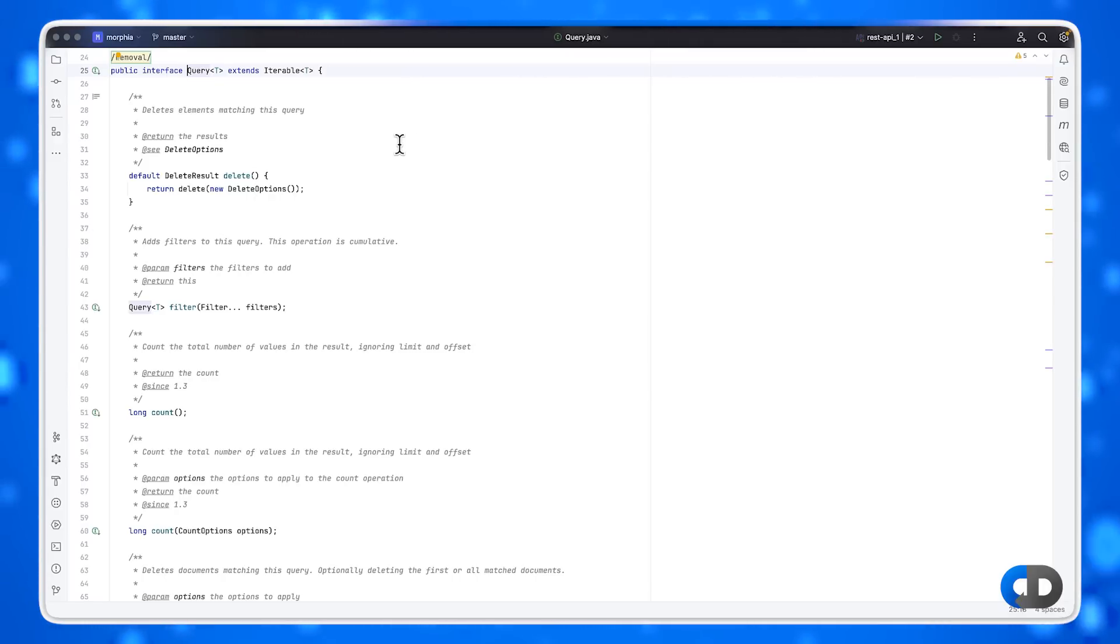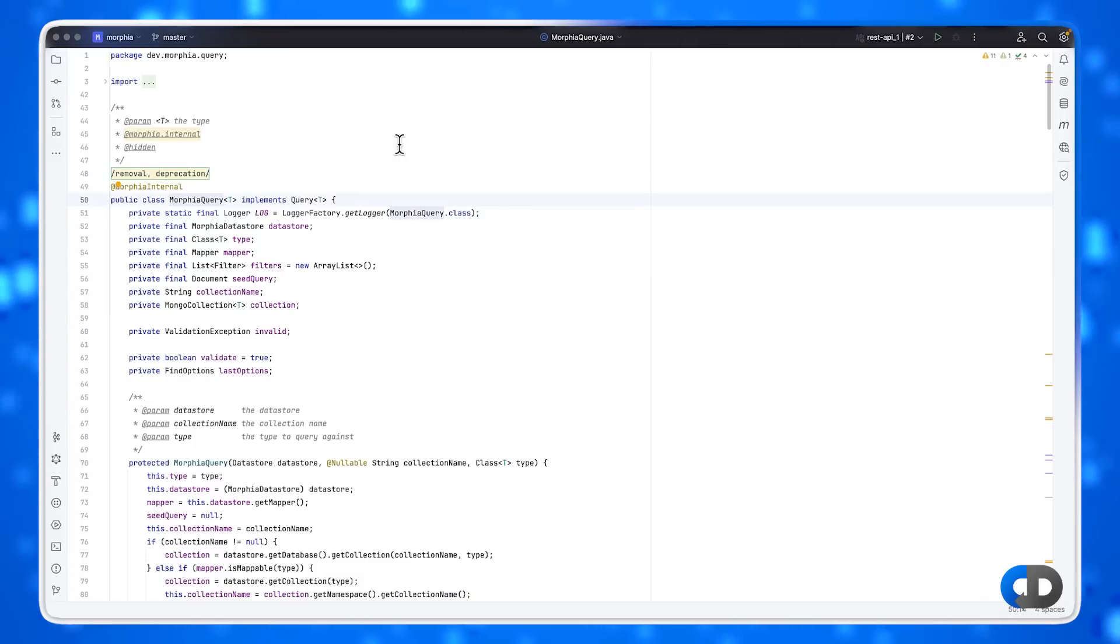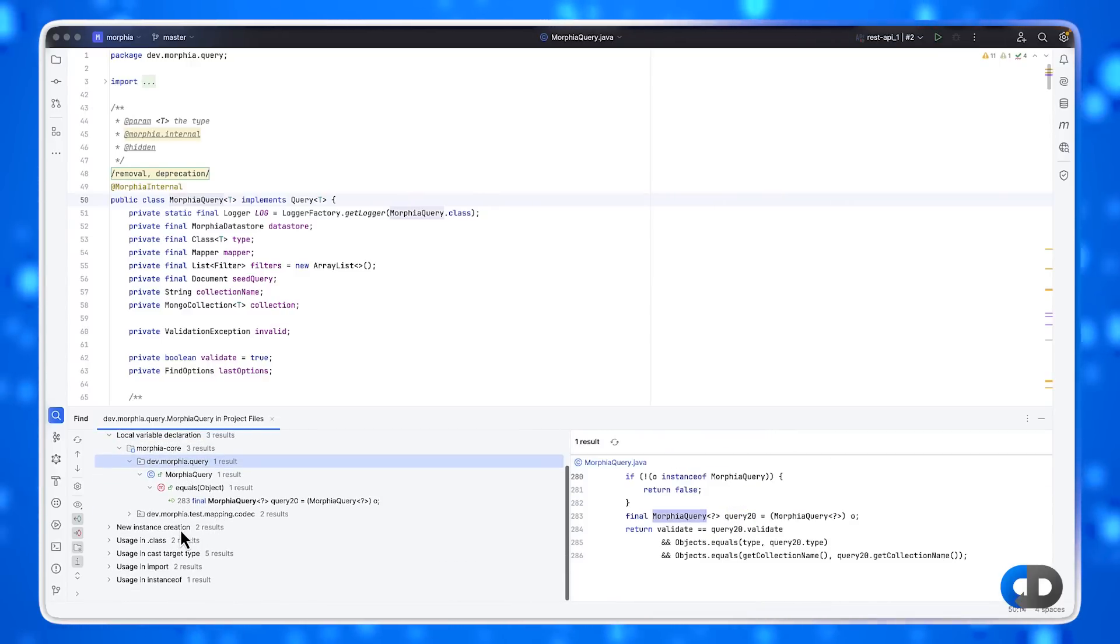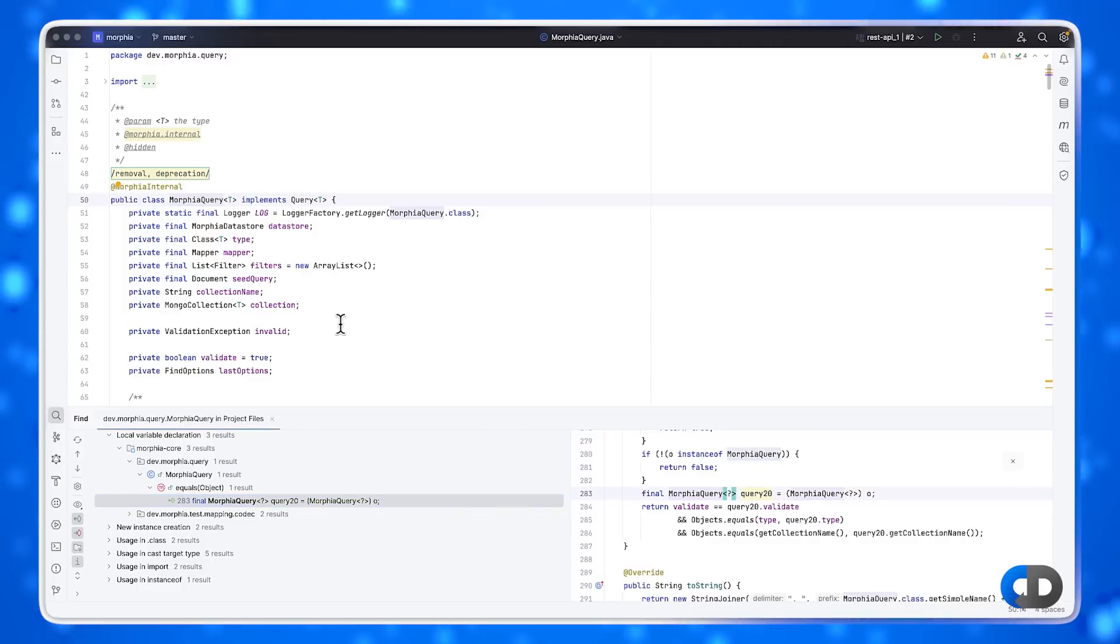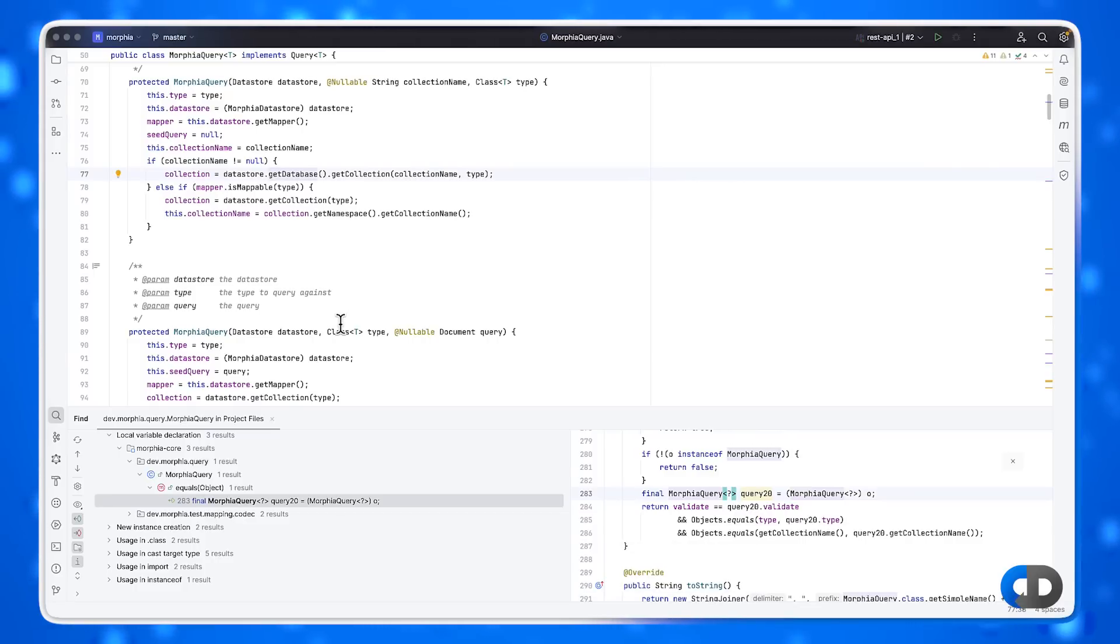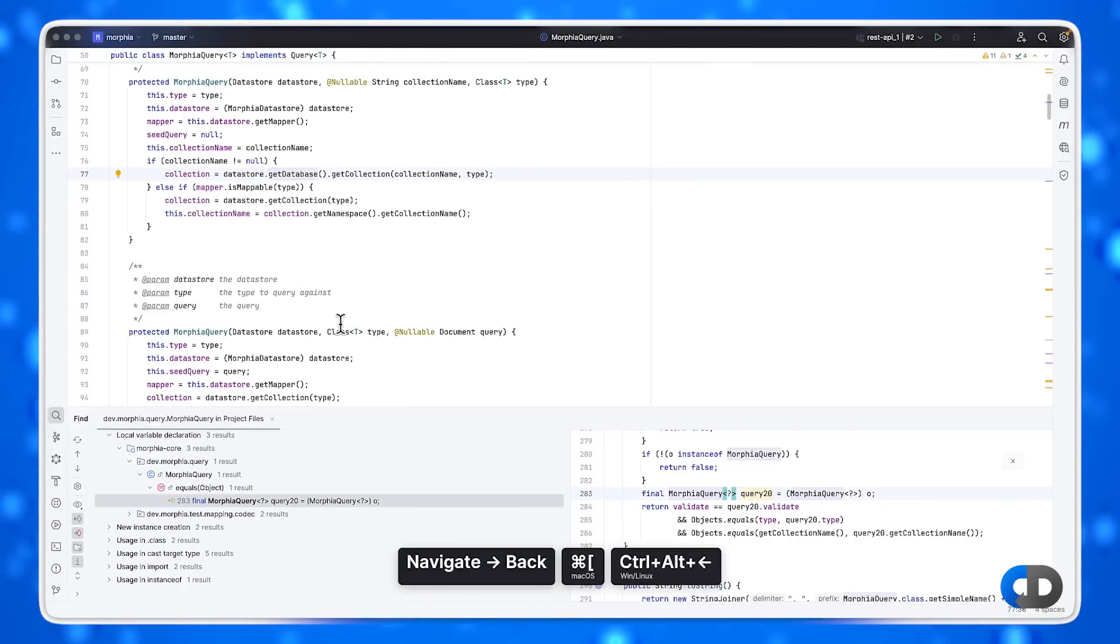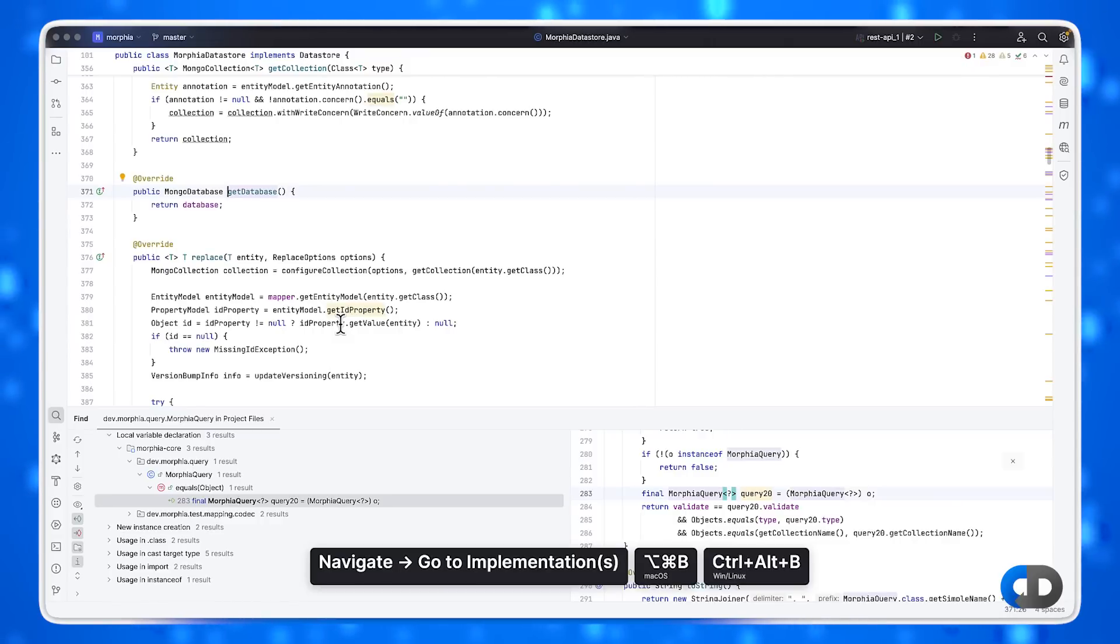You can navigate to the implementation of something, which is really helpful if you're working with interfaces. You can find usages of a class or a method. Look through the results to see where this is being used and how. You can go to a specific line. And you can drill into the implementations of methods. In fact, there's a difference between go to declaration, which will often take you to the declaration on an interface, for example, versus go to implementation, which will take you to the thing you probably wanted to see, the implementation details of that method.